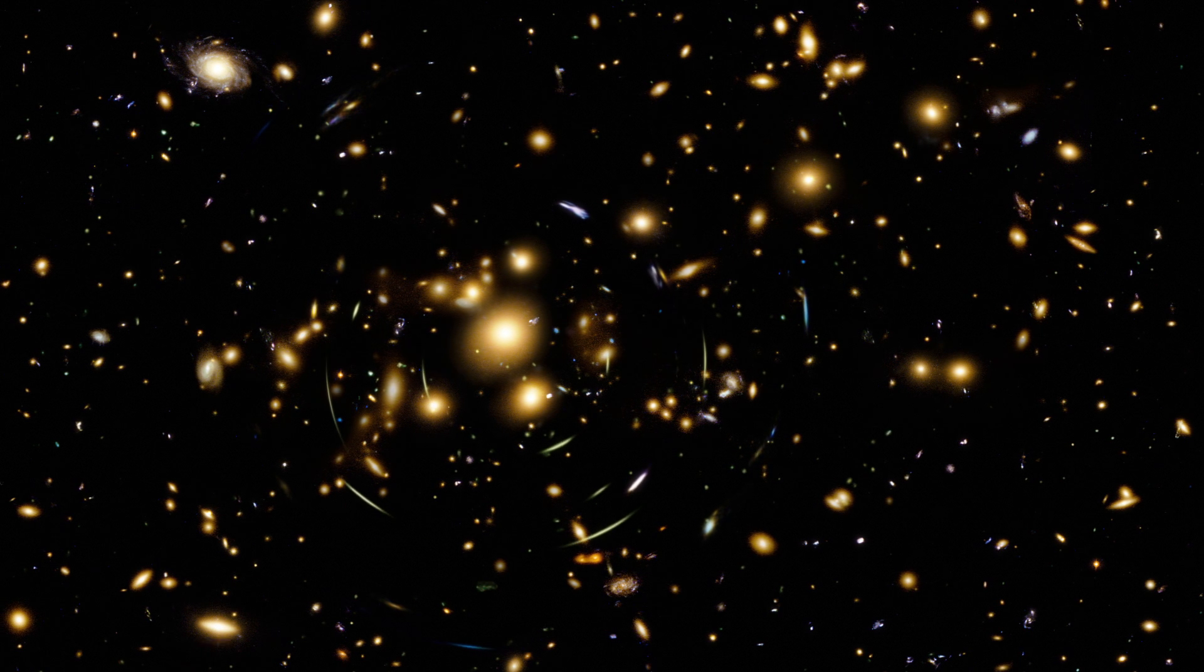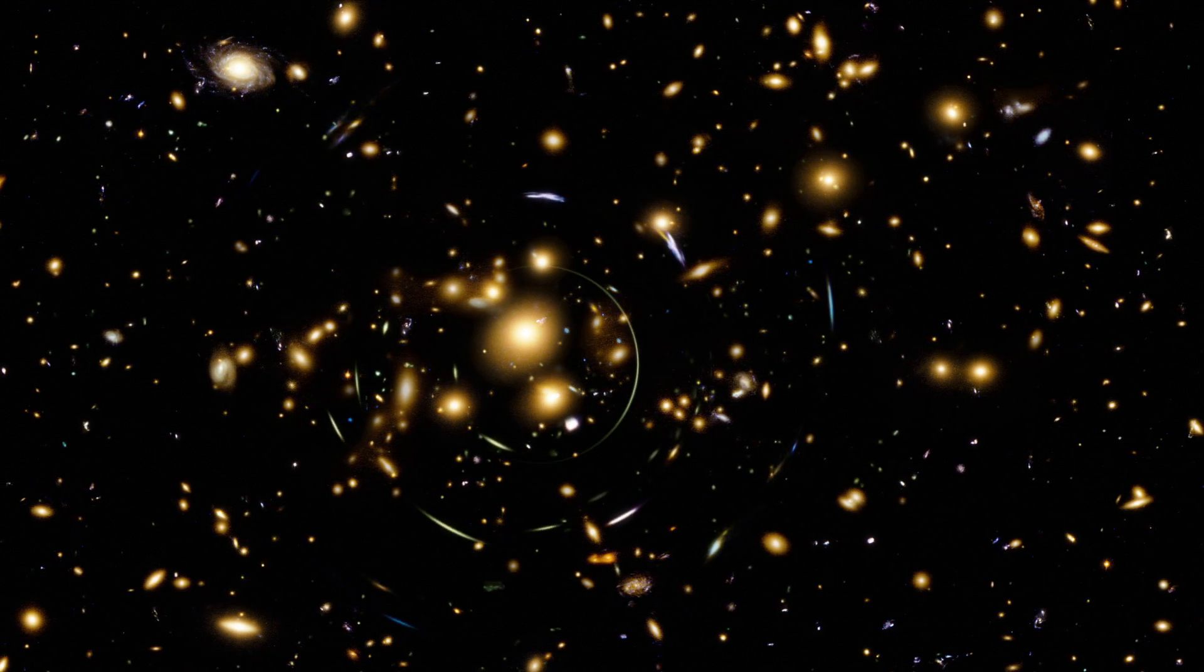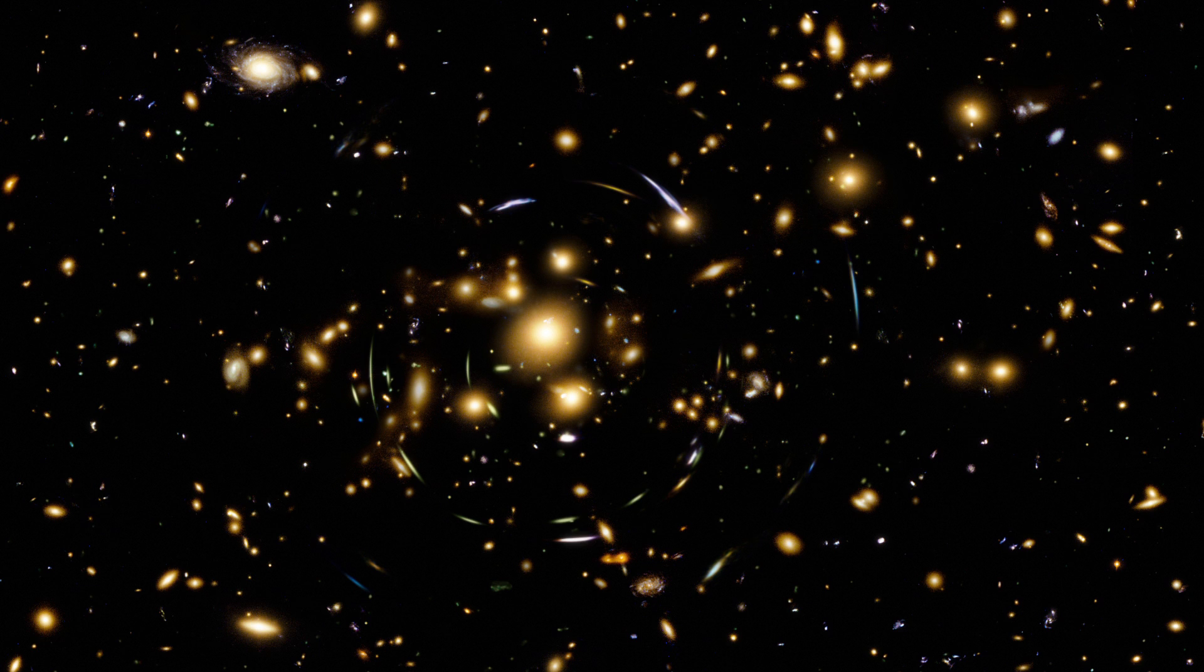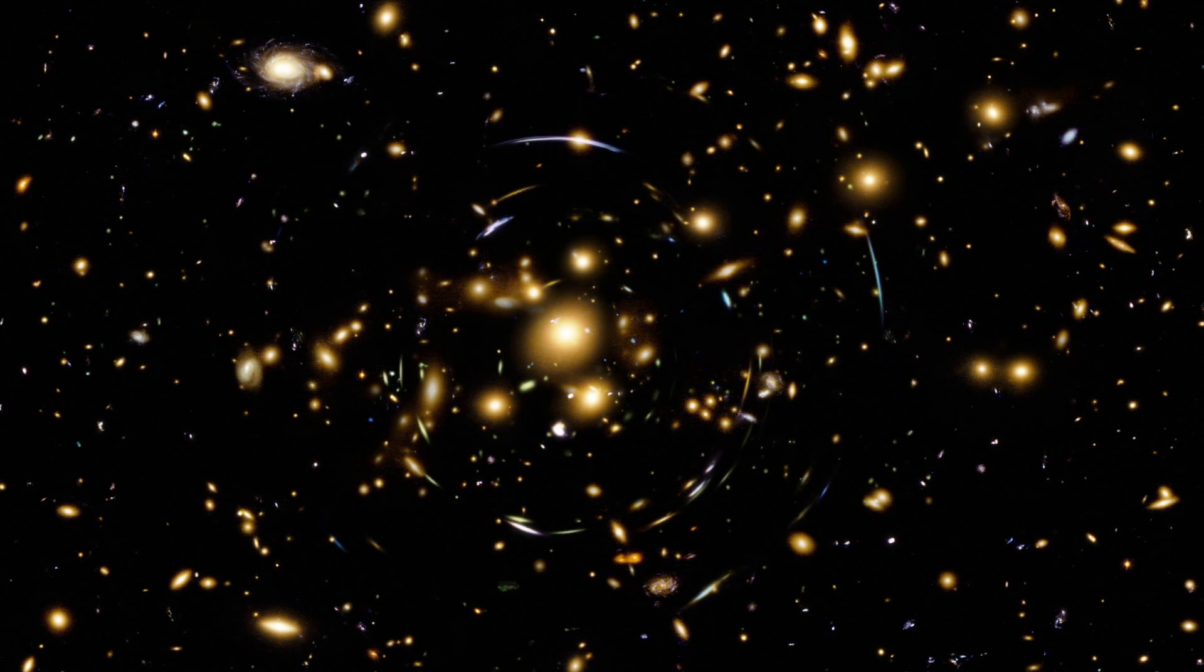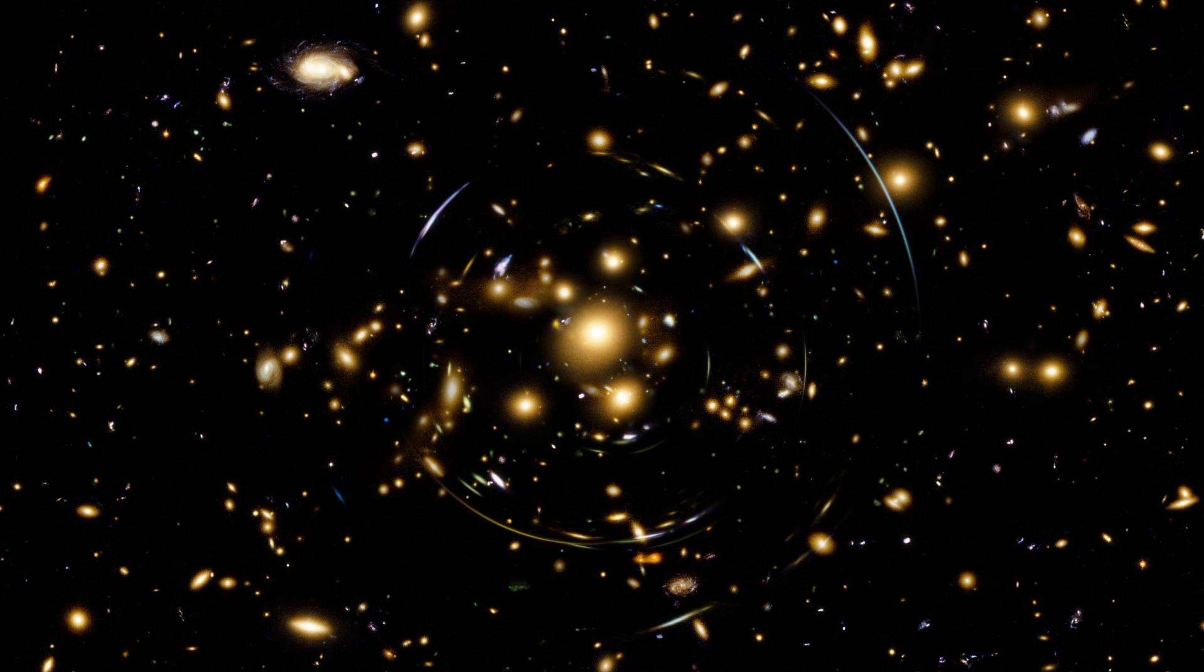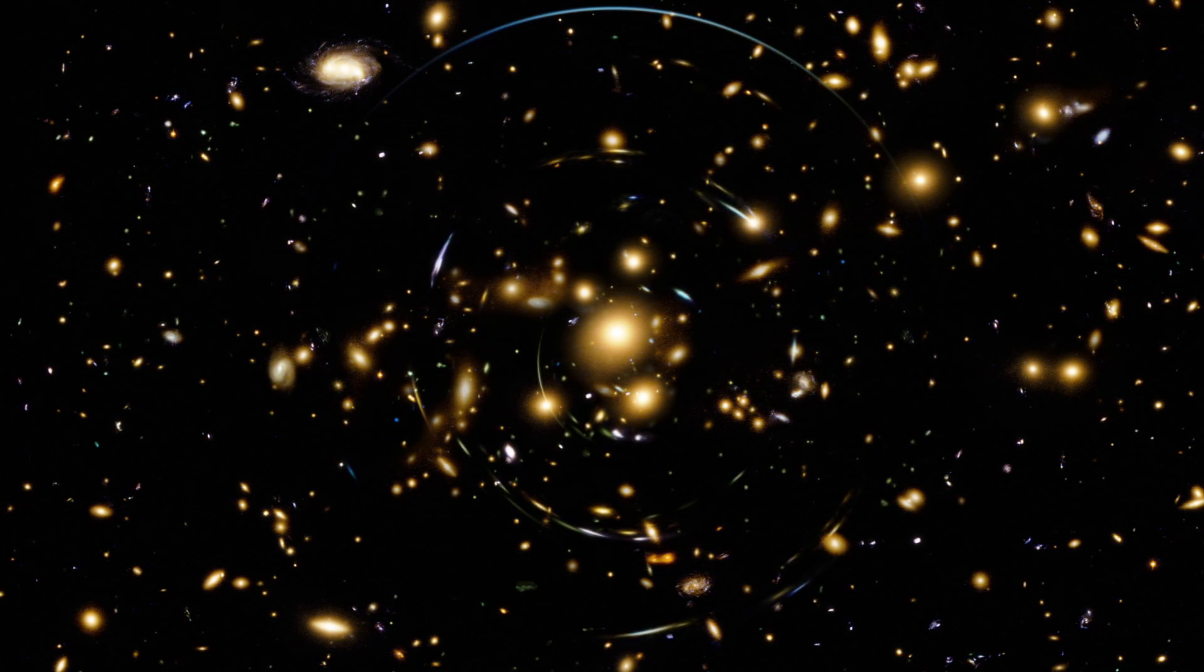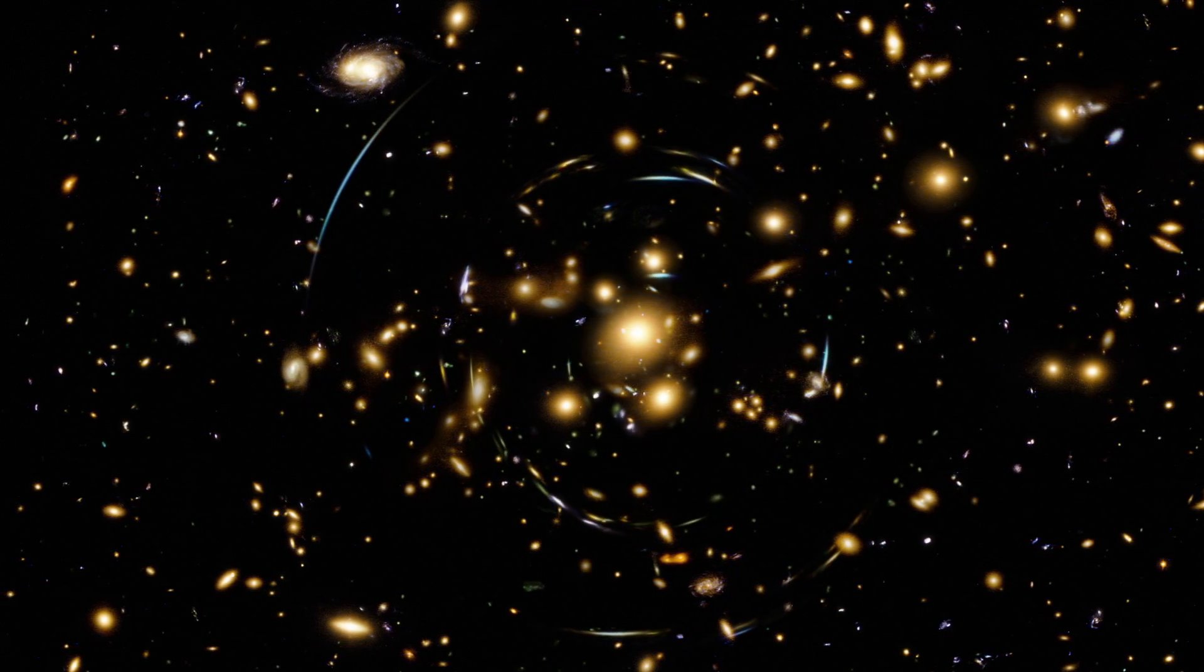This produces weird and wonderful arrangements of warped light in the form of arcs and distorted shapes. Magnified by ABEL 2744, some of the most distant galaxies ever found became visible.